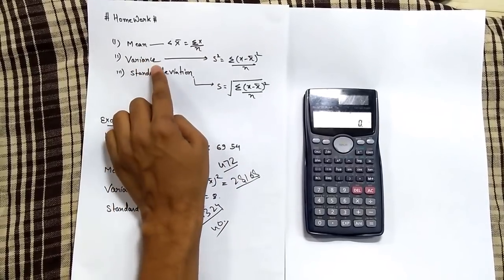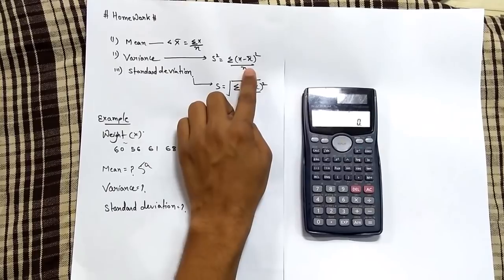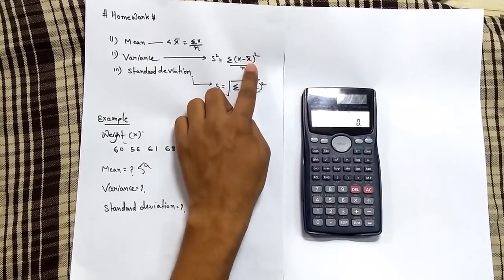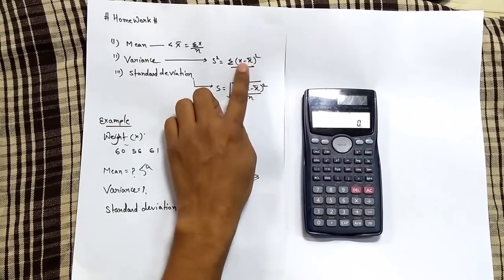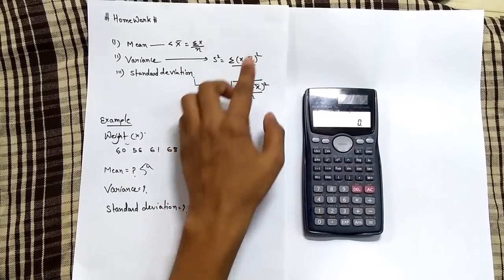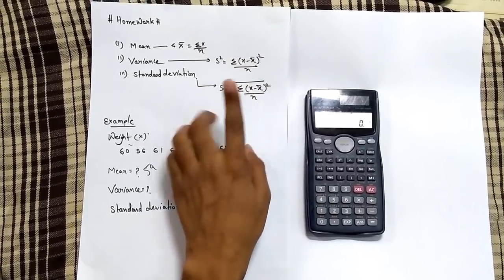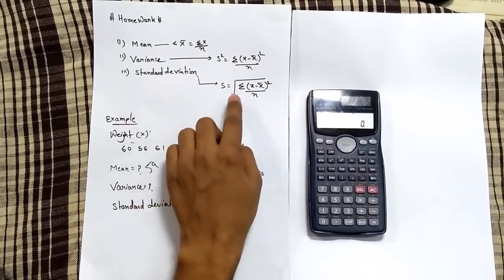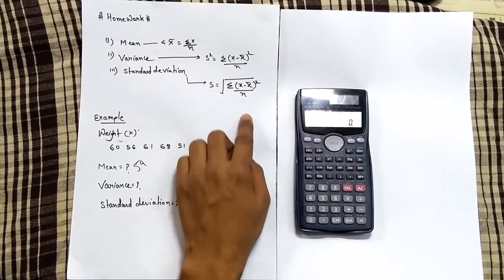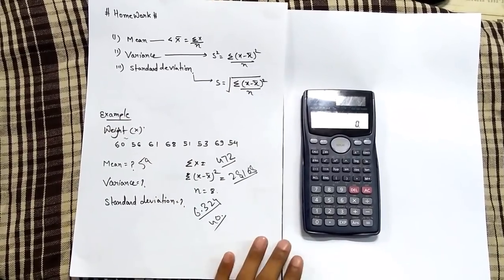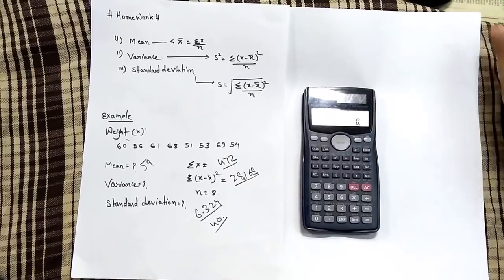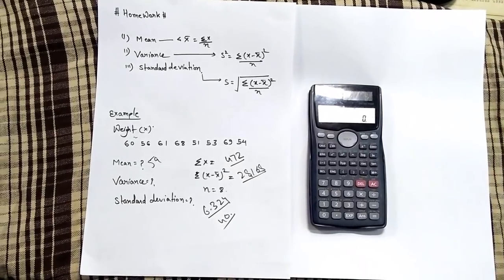For calculating variance, you follow this formula where X̄ is mean, so you subtract X minus X̄, then square, sum up, and divide by n. Similarly, the root of variance will give you the standard deviation.